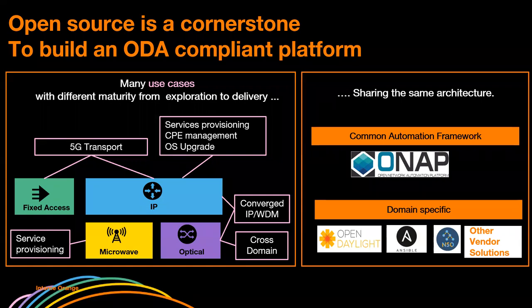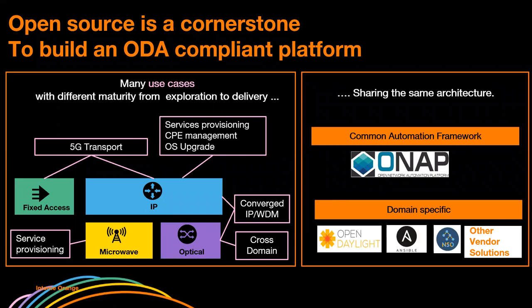We have selected ONAP. We have many use cases, but must consolidate them in a single environment to achieve the multi-domain awareness we want. Use cases include IP infrastructure, microwave infrastructure, optical infrastructure, fixed access infrastructure, covering scenarios such as 5G transport, CPU management, service provisioning in IP backbone, IP-WDM convergence, optical cross-domain end-to-end scenarios, and service provisioning for microwave. We selected ONAP components to build a common automation framework — sharing the same infrastructure and technical enablers — and added at the southbound some domain-specific components such as OpenDaylight SDN controller, Ansible Playbooks, and Cisco NSO.